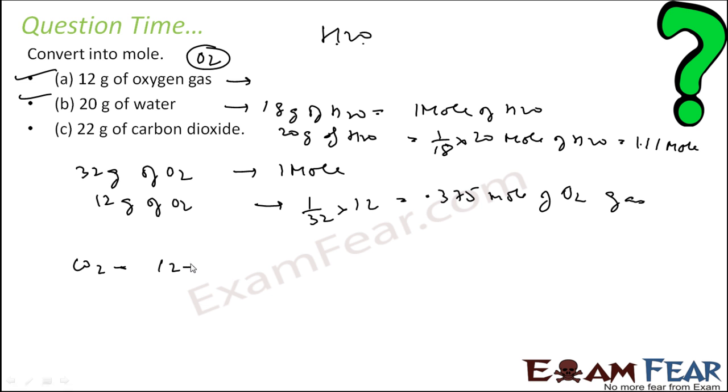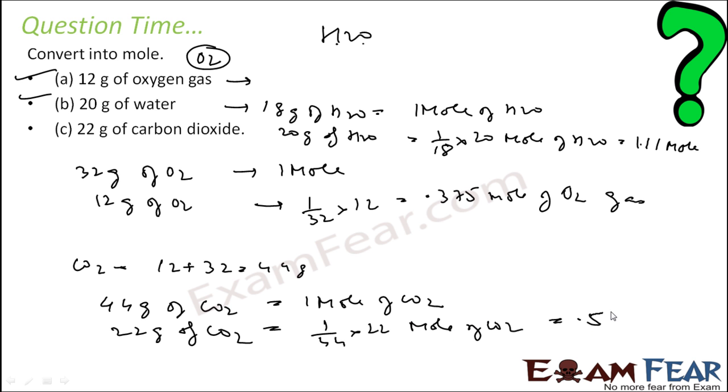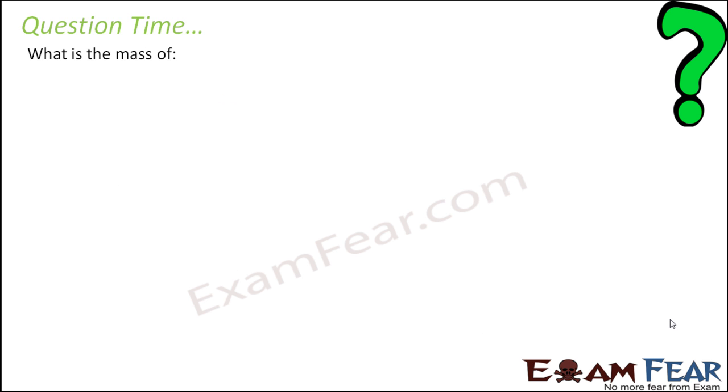Next is 22 grams of carbon dioxide. Carbon dioxide molecular mass is 12 plus 16 into 2, that is 44 grams. So 44 grams of carbon dioxide is 1 mole. Then 22 grams of carbon dioxide will be 1 by 44 into 22, that is 0.5 mole of carbon dioxide.